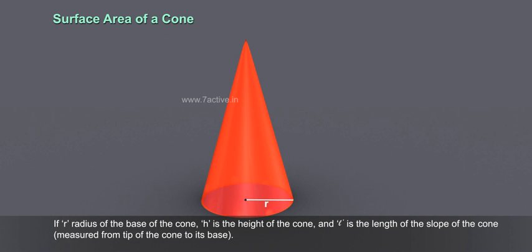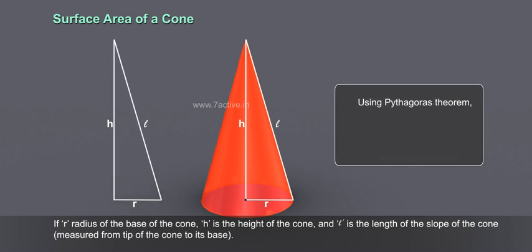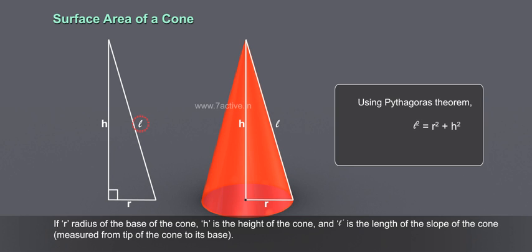If R is the radius of the base of the cone, H is the height of the cone, and L is the length of the slope of the cone measured from tip of the cone to its base, using Pythagoras theorem, L² equals R² plus H².